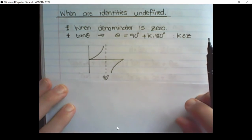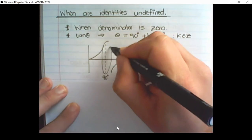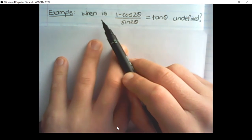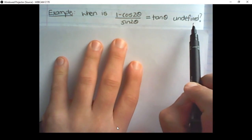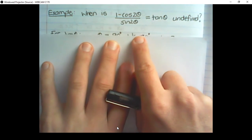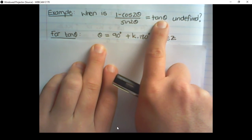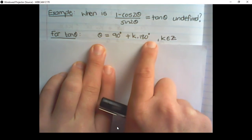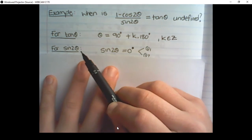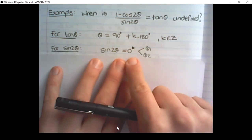Graphically, this is a normal tan graph, and we know that tan is undefined at 90°. Here is our example: the identity will be undefined for values of tan and where sin 2θ equals zero. For tan θ, it is undefined where θ equals 90° plus k times 180°, where k is an integer. For sin 2θ, we set sin 2θ equal to zero — not zero degrees, just the value of zero.